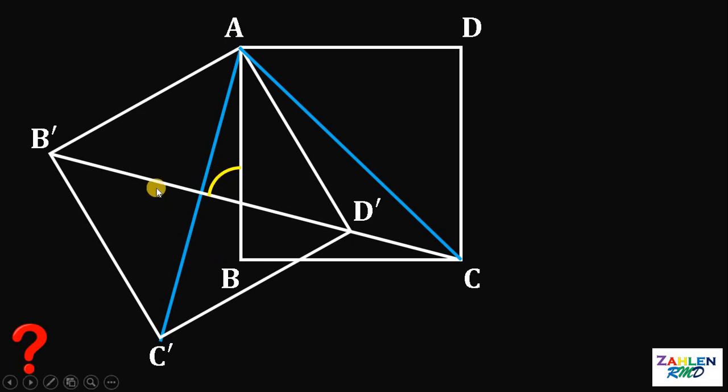Now, take note that the diagonals of the square is perpendicular bisector of each other. So, this is 90 degrees. And now, if we let the diagonal of this square must be equal to 2x.